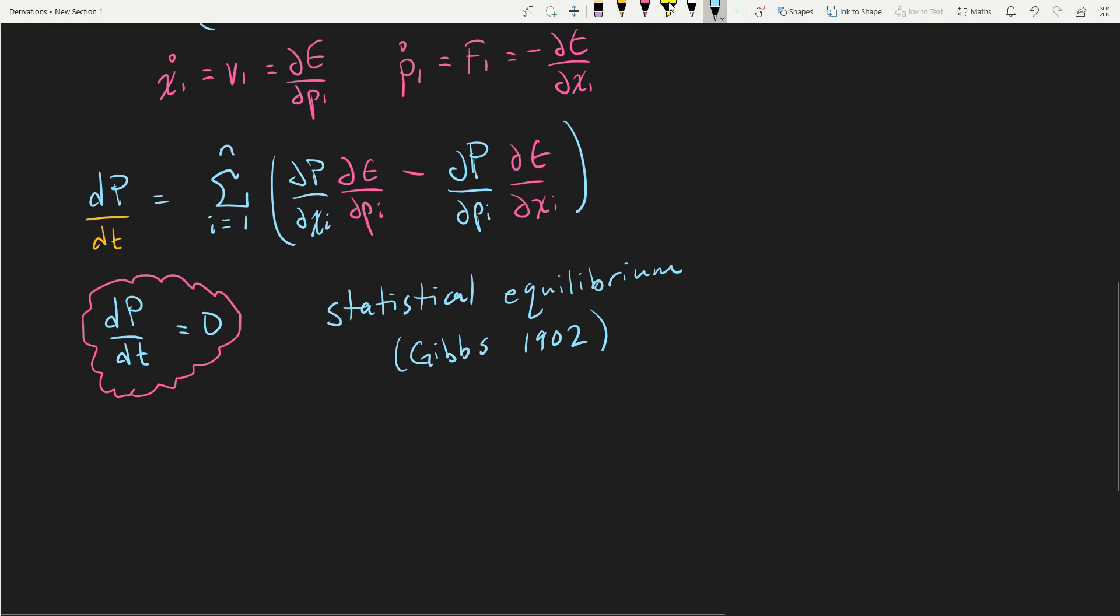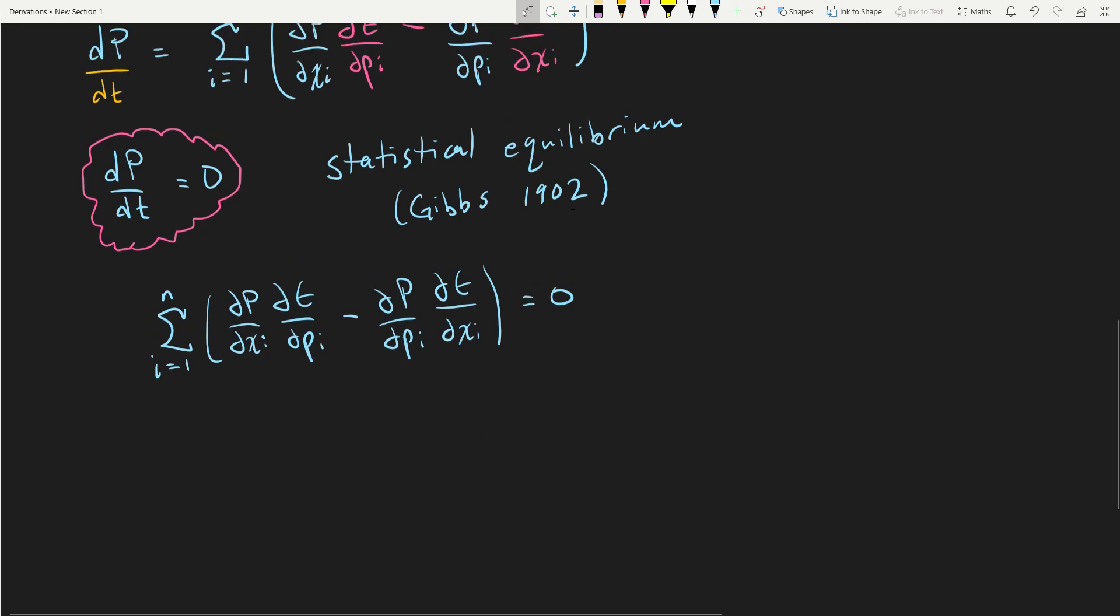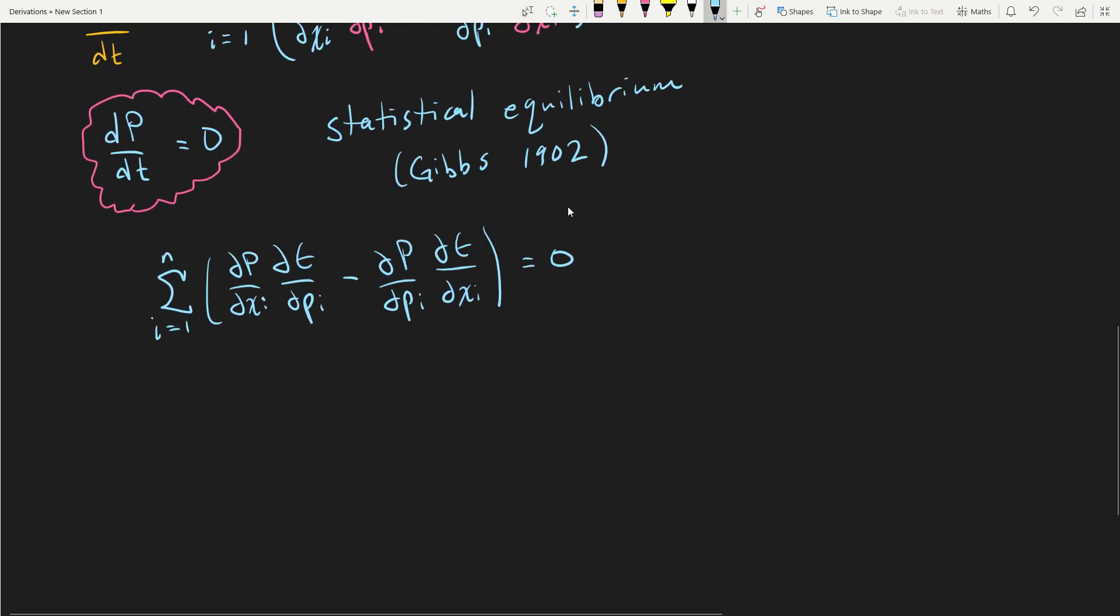Let's follow the implication. What we get is the sum from i equals 1 to n of ∂P/∂xi ∂E/∂pi minus ∂P/∂pi ∂E/∂xi all equals zero. There is a solution to this, and I'm going to tell you what it is. What you get is the probability is a function of E. It's going to be some constant times e^(-bE). This is basically the form we were looking for.